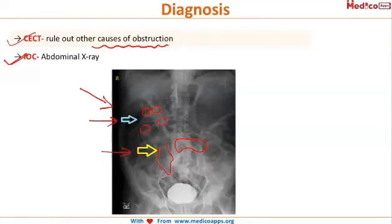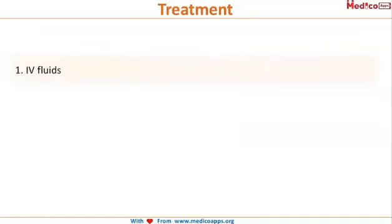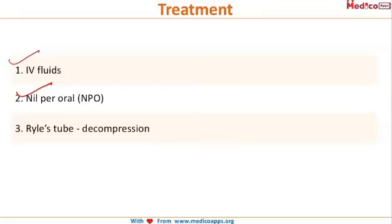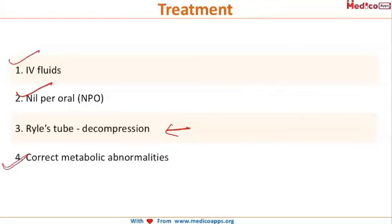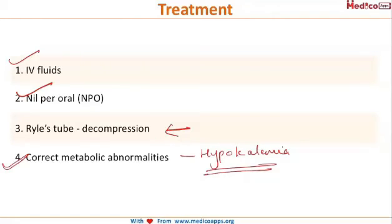Once the diagnosis is made, the patient is managed with IV fluids and kept nil per oral. A Ryle's tube is used to decompress the bowel, and it is necessary to correct metabolic abnormalities like hypokalemia, which is a major cause of paralytic ileus.